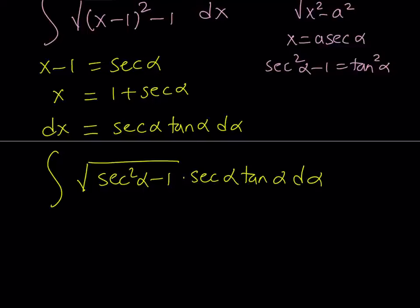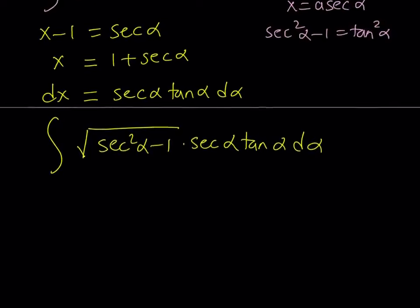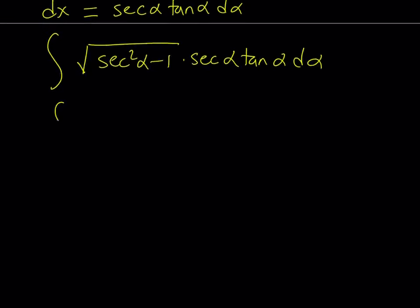Now we've got everything we need, but let's go ahead and simplify inside the radical. Secant squared alpha minus 1 is equal to tangent squared, so we're going to write it as tangent alpha.